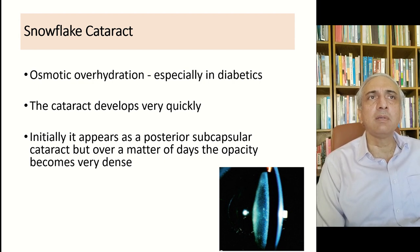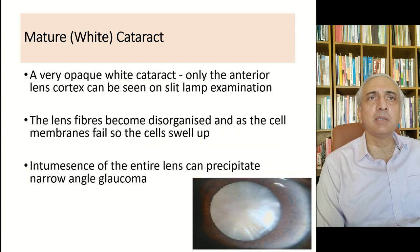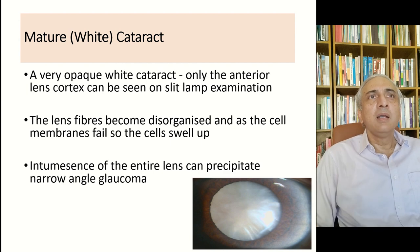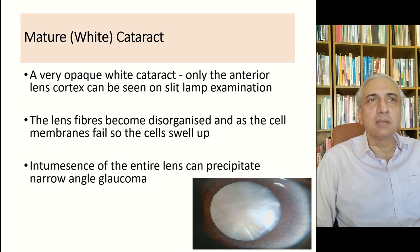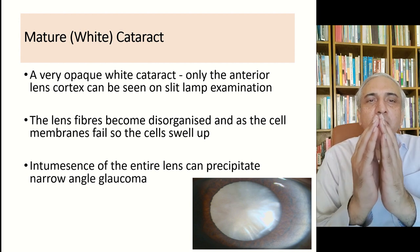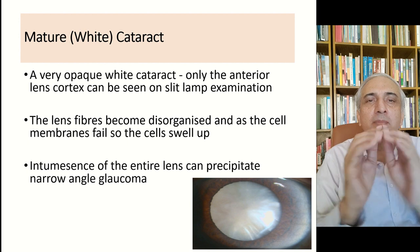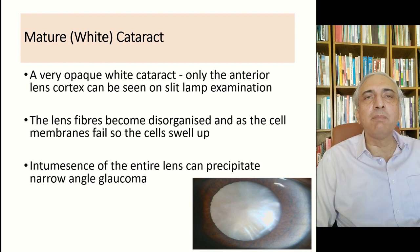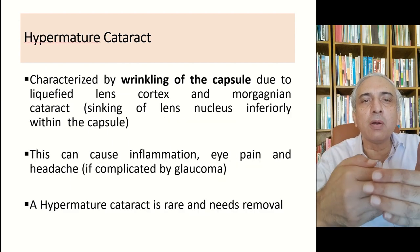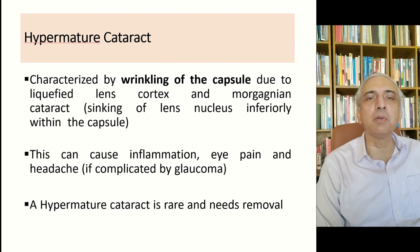In diabetics, snowflake type opacities can develop due to osmotic overhydration. The cataract develops quickly — initially appearing as posterior subcapsular opacity, but over a matter of days the opacity becomes very dense. This presents as a white mature cataract. The lens fibers become disorganized, cell membranes fail, cells swell, and as the lens becomes thicker it imbibes water, pushing behind the iris and potentially causing relative pupillary block.